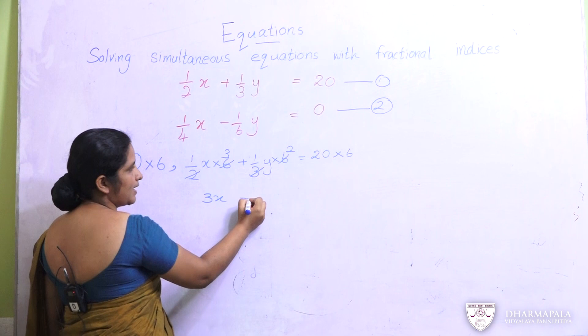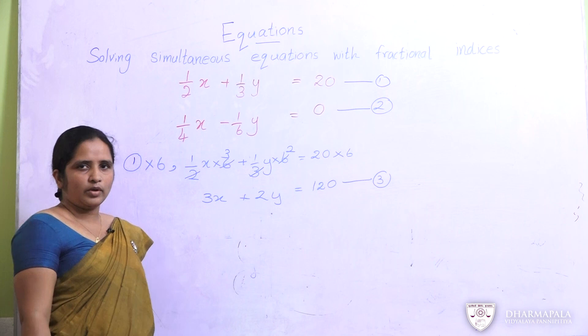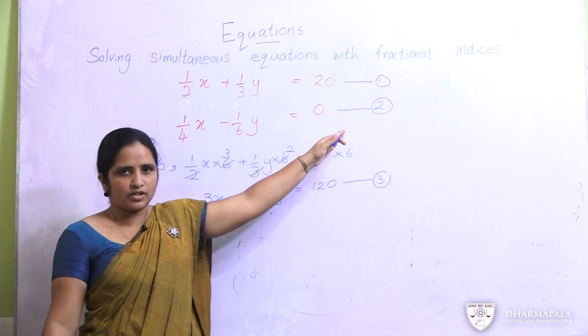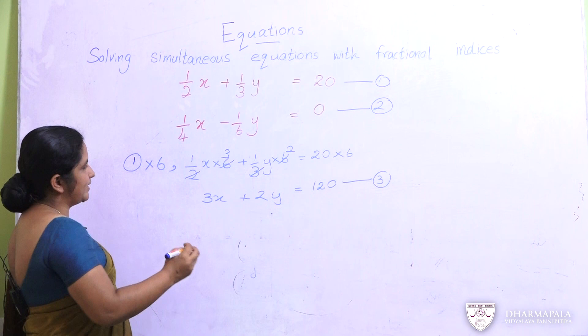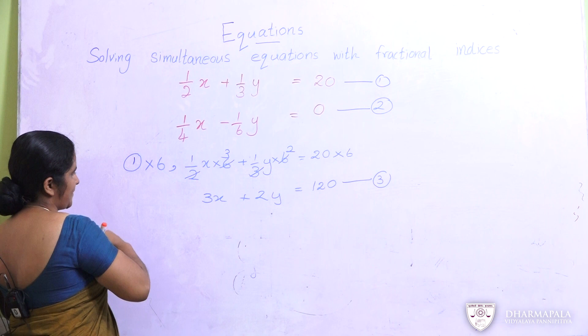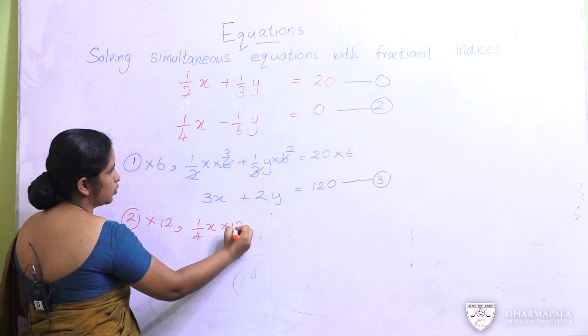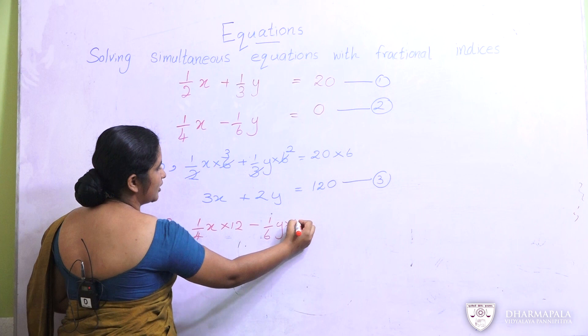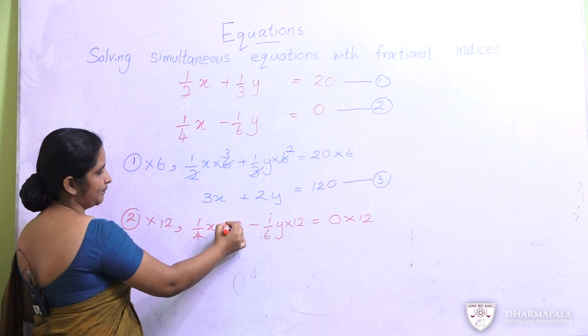We will name that equation 3. In the same way we can multiply the second equation also by its LCM. The LCM of 4 and 6 is 12. So we multiply the second equation by 12. Then one quarter x multiplied by 12, minus one sixth y multiplied by 12, equals 0 multiplied by 12. When we simplify this equation we get 3x minus 2y equals 0. We will name it as equation 4.